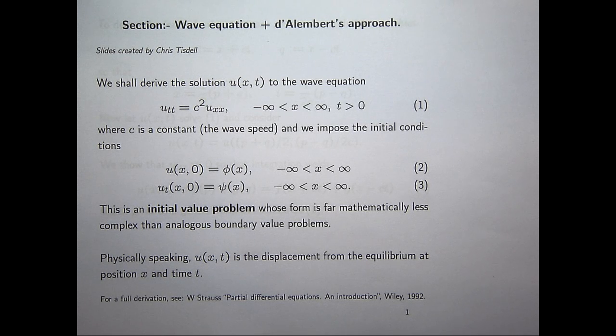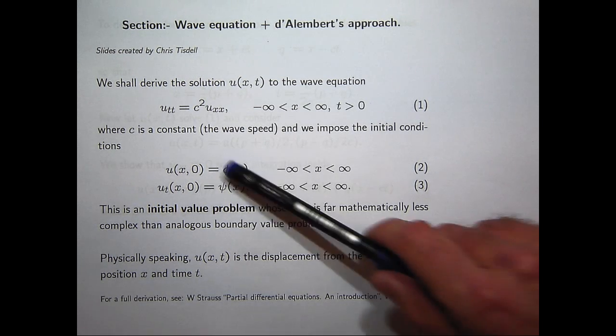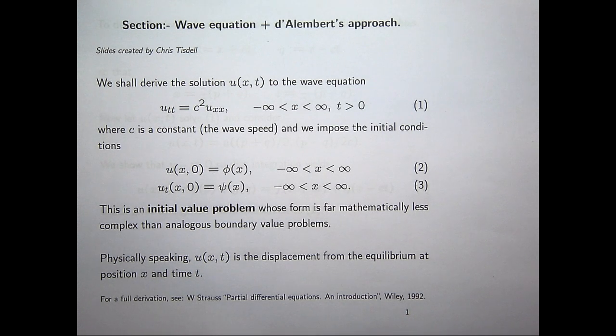Now, we have initial conditions. So the phi and the psi can be thought of as known functions. Physically speaking, the phi is like the initial displacement of the string at time t equals 0. And the psi is the initial velocity of the string at time t equals 0.